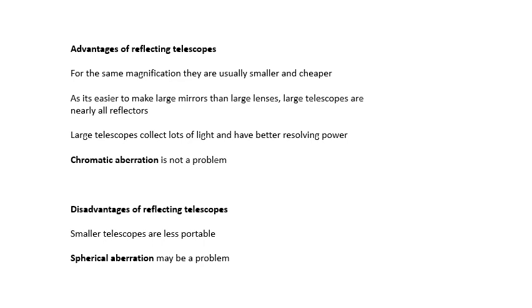Now it's easier to make large mirrors than it is to make large lenses, so large telescopes are nearly all reflectors, and not just optical ones. We're talking radio telescopes and other types as well. Big telescopes - they are reflectors, not refractors. It's very difficult to make a large lens accurately. And because of this, large telescopes collect lots of light, so you get a nice bright image, and they have a better resolving power which we'll talk about in another video. Also, chromatic aberration is not a problem.